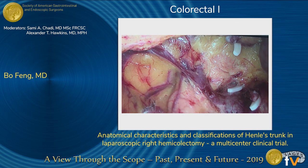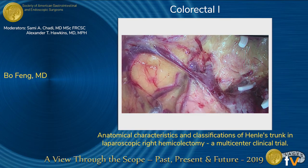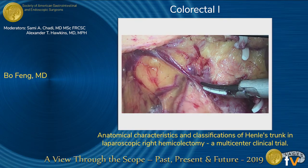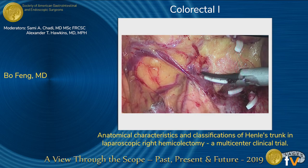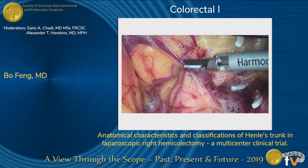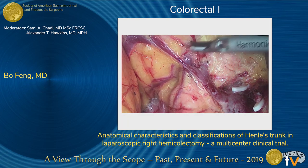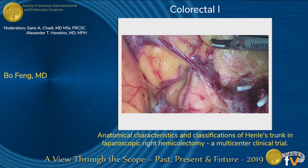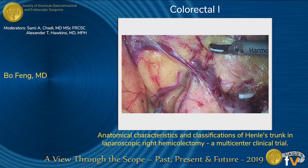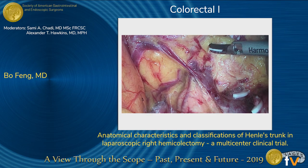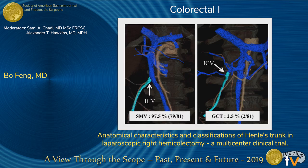In this case, the anatomy is really complicated and we initially cannot identify which type it is. We need to perform a hybrid procedure — approaching from middle to lateral and from upside down. We ultimately identified this as a type 2 case.